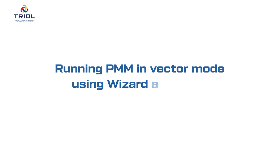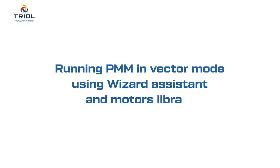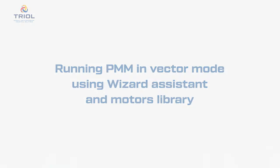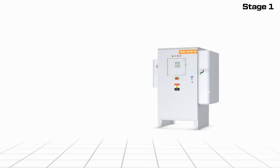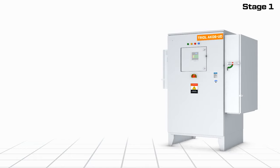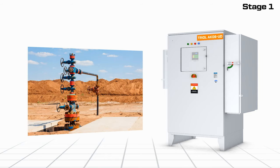In this video, we will show you running PMM in Vector Mode using the Wizard Assistant and Motor Library. Varial Speed Drive AK-06 Series – a reliable and cost-effective solution for handling submersible electric centrifugal pumps in various operating conditions.